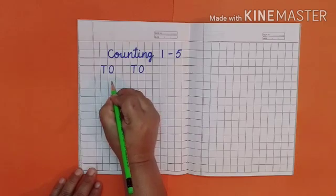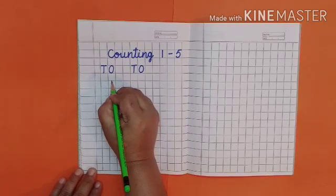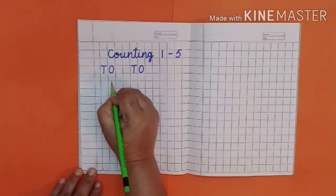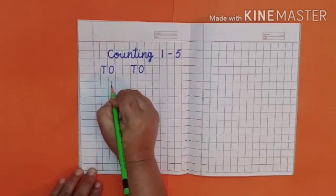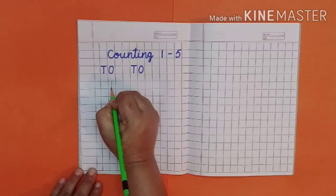Keep pencil on dot to make one. Start from dot. Come to bottom line of square like this.